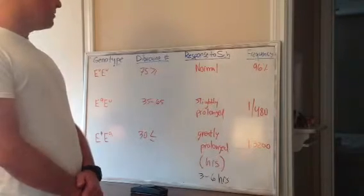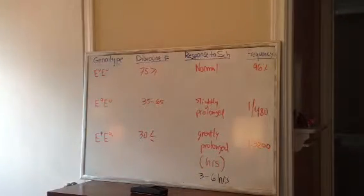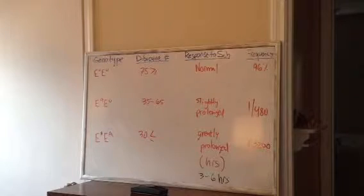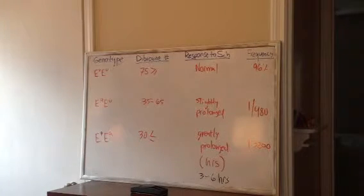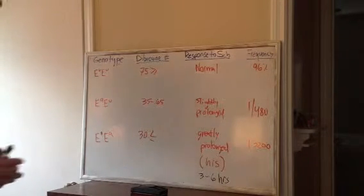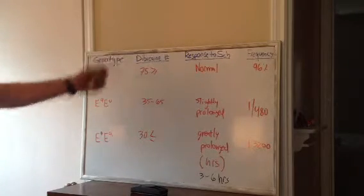So a way we can determine if someone has a deficiency and what type of deficiency they have, specifically what genotype, is that we can look at their dibucane number.